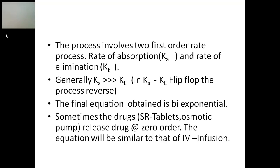When discussing Ka (absorption rate constant) and Ke (elimination rate constant), it is important to understand which one is faster. Generally, Ka is much faster than Ke — that is, absorption is faster than elimination. However, there are some instances when Ka becomes lower than Ke.